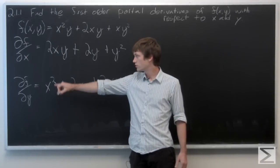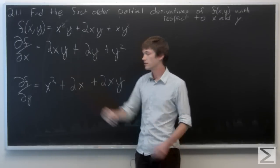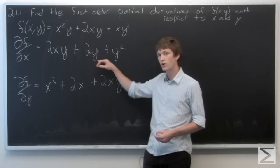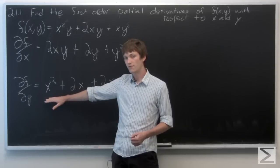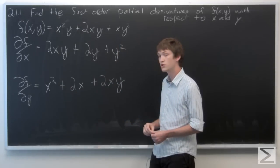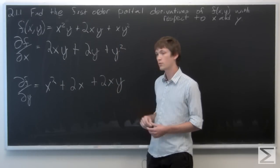So we get the partial derivative with respect to x is 2xy + 2y + y². And the partial derivative of f with respect to y is x² + 2x + 2xy. And that's it.